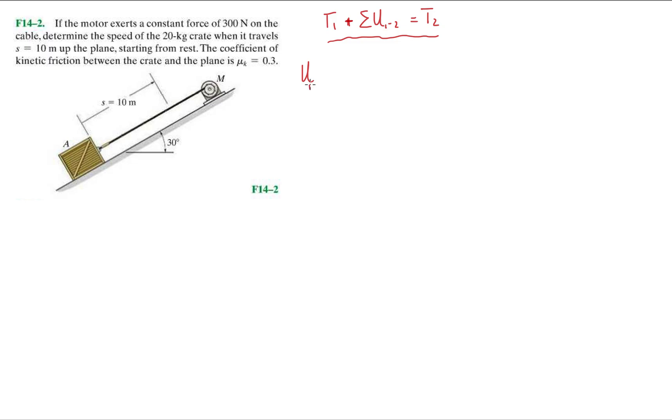Let's start with the spring, which is given by the equation U_spring = ½k(s₂² - s₁²). We're not dealing with a spring in this equation, so I know this term is going to be zero.